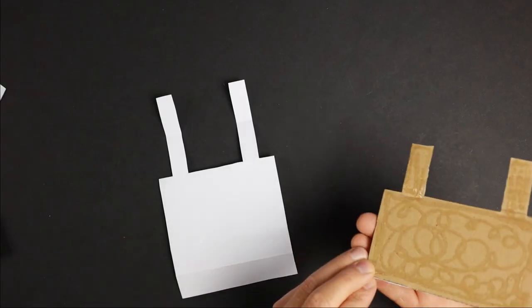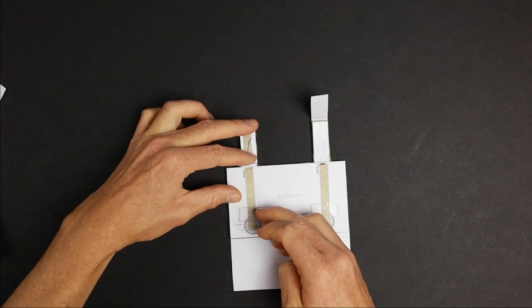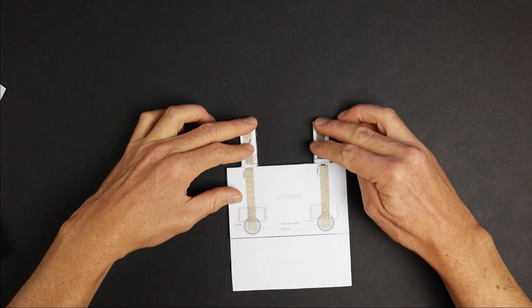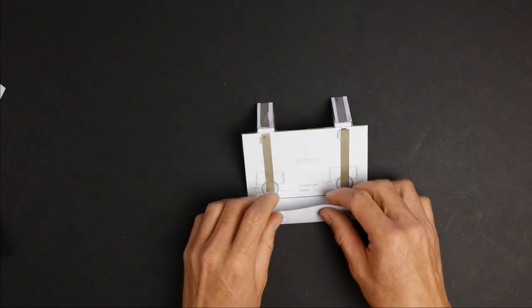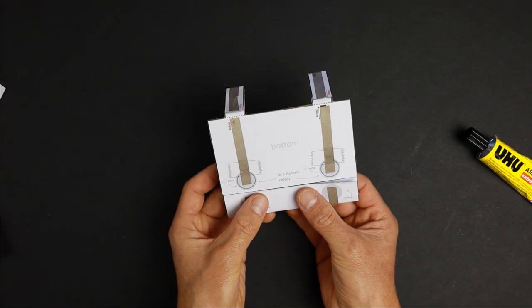Proceed with the top side. Fold these parts around the edge. These will be our switches. This part is where the batteries will go. You need to fold it twice. Add some glue in between.